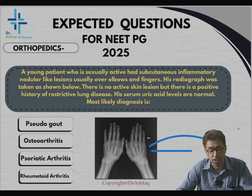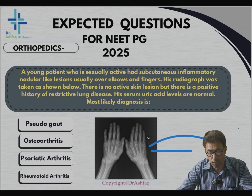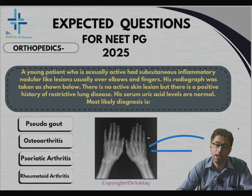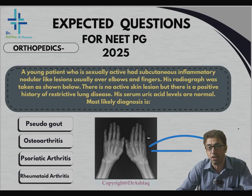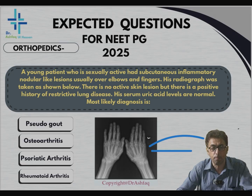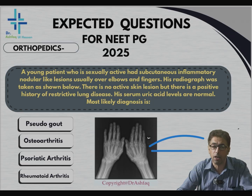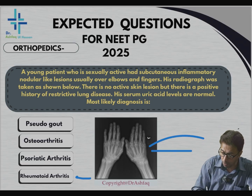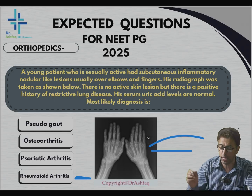Rheumatoid arthritis, option D, is usually present in young patients. There may not be much skin lesion associated. Serum uric acid levels would be normal. The extra-articular manifestations of rheumatoid arthritis, like restrictive lung disease, are very common. Involvement of the smaller joints — the metacarpals, interphalangeal joints, wrist joint — and sometimes the elbow, along with early morning stiffness and the ulnar deformity shown in the radiograph — all these clues point to the diagnosis of rheumatoid arthritis.